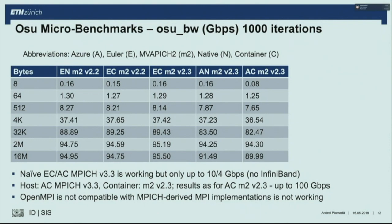On Azure, the native and container results are comparable, with a noticeable difference only for very small messages. When using OpenMPI on Azure, we noticed InfiniBand is not being used. If you build a container with MVAPICH2 inside, you do get InfiniBand. OpenMPI is not compatible with MVAPICH2 on the host — you cannot put MVAPICH2 on the host and OpenMPI in the container and expect it to work.